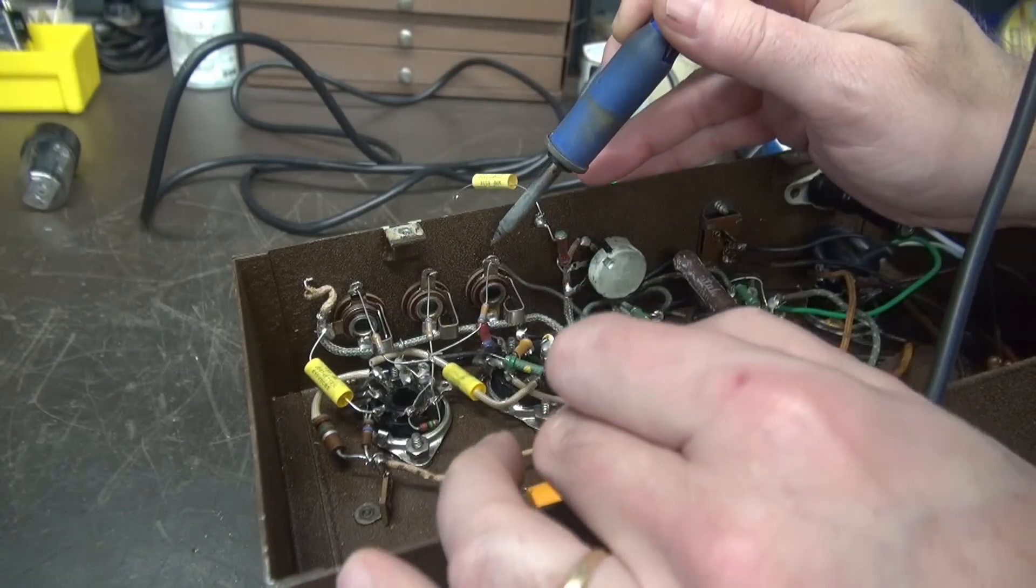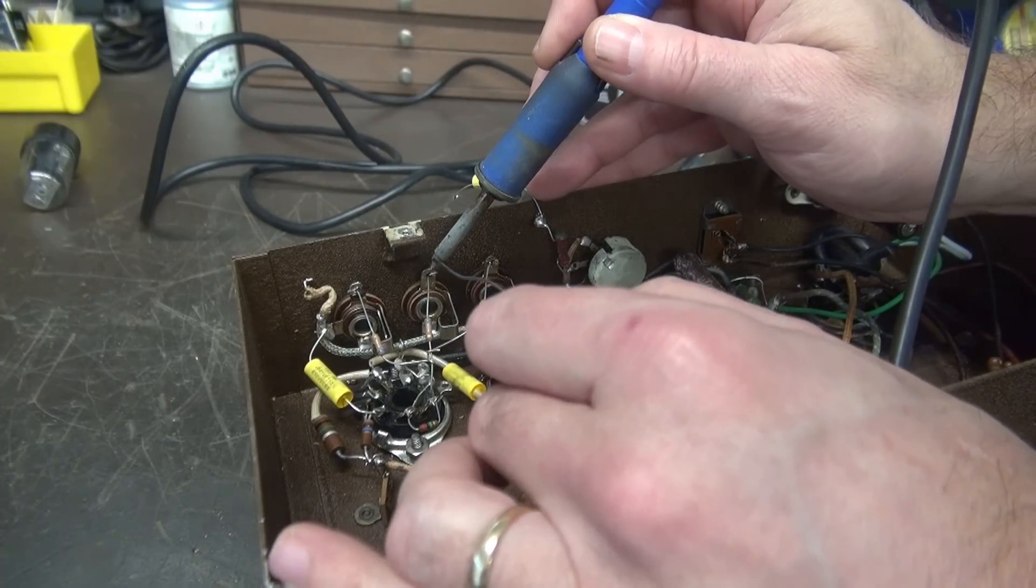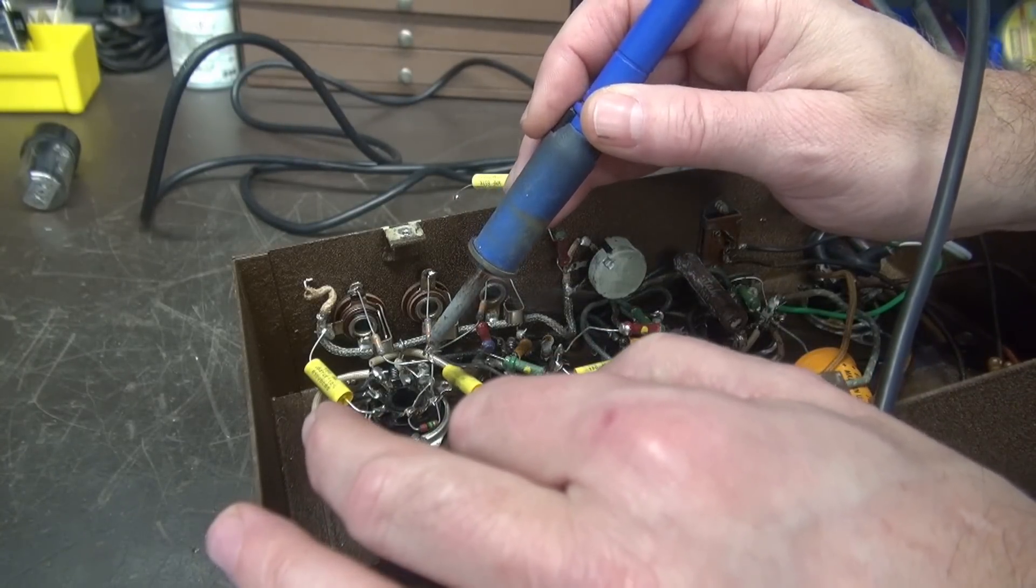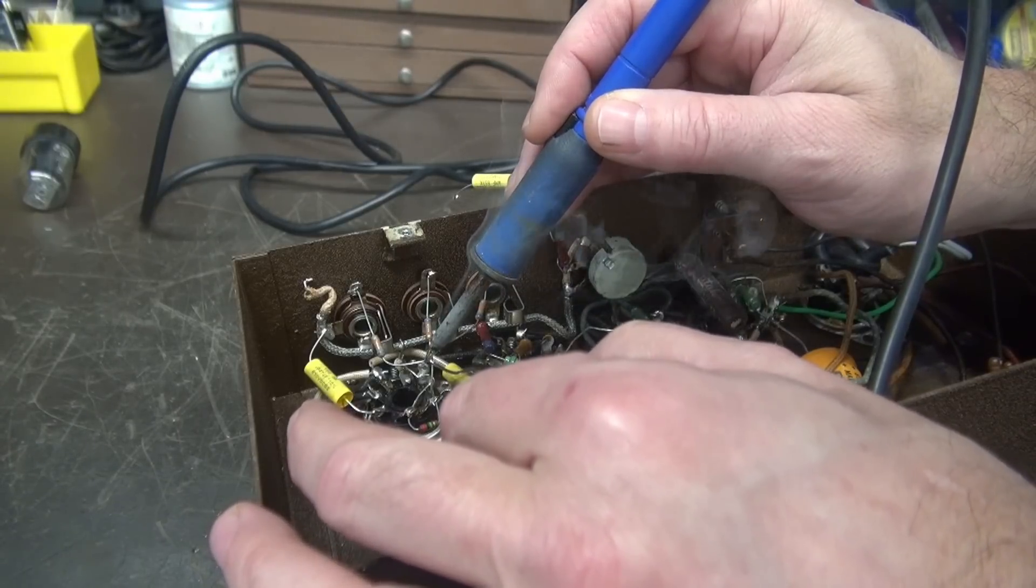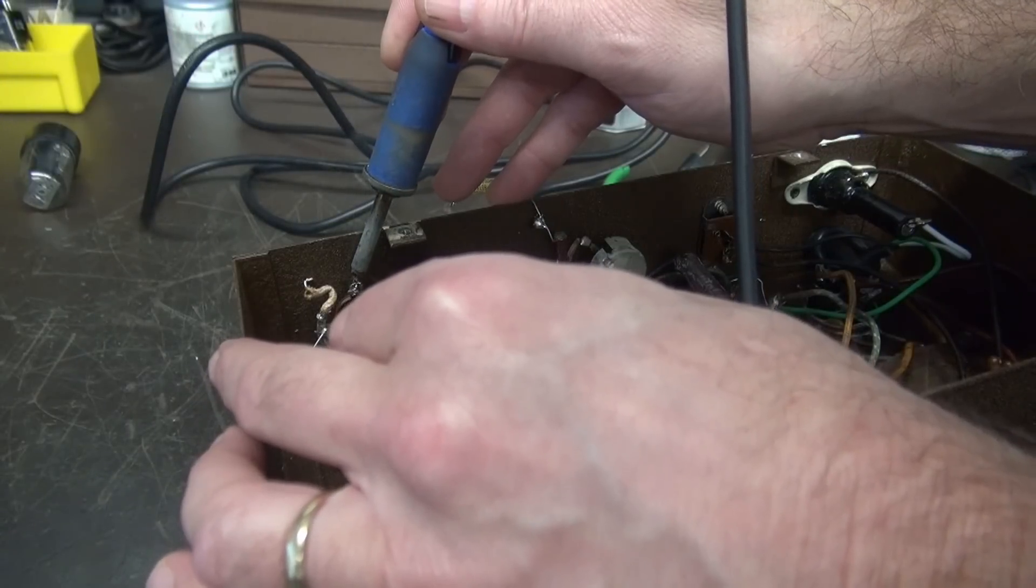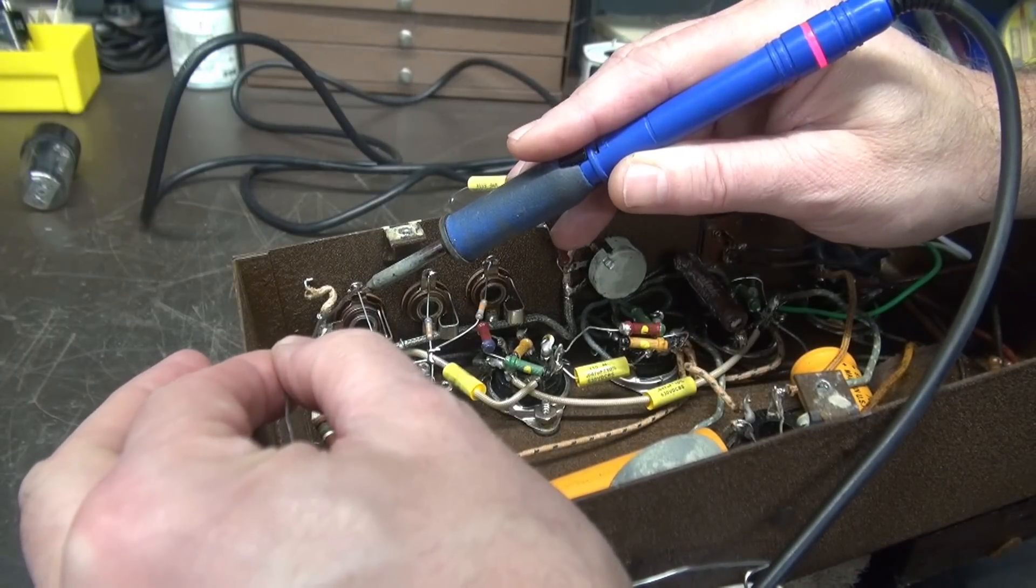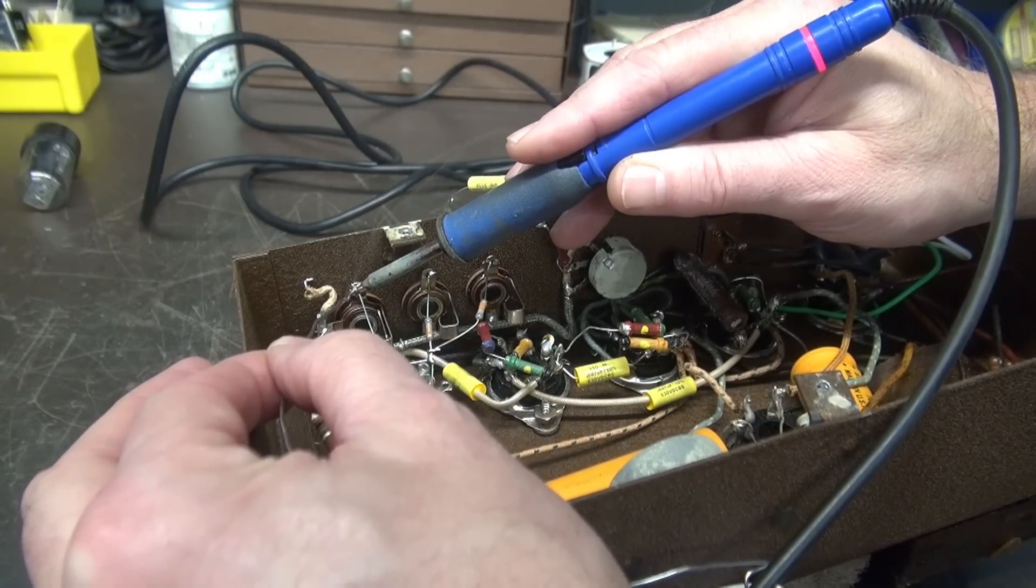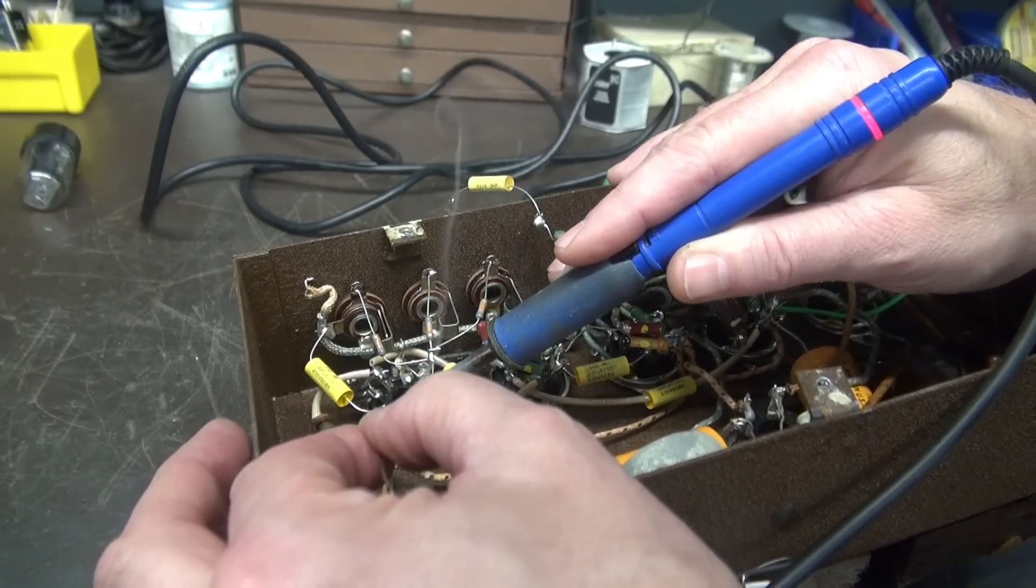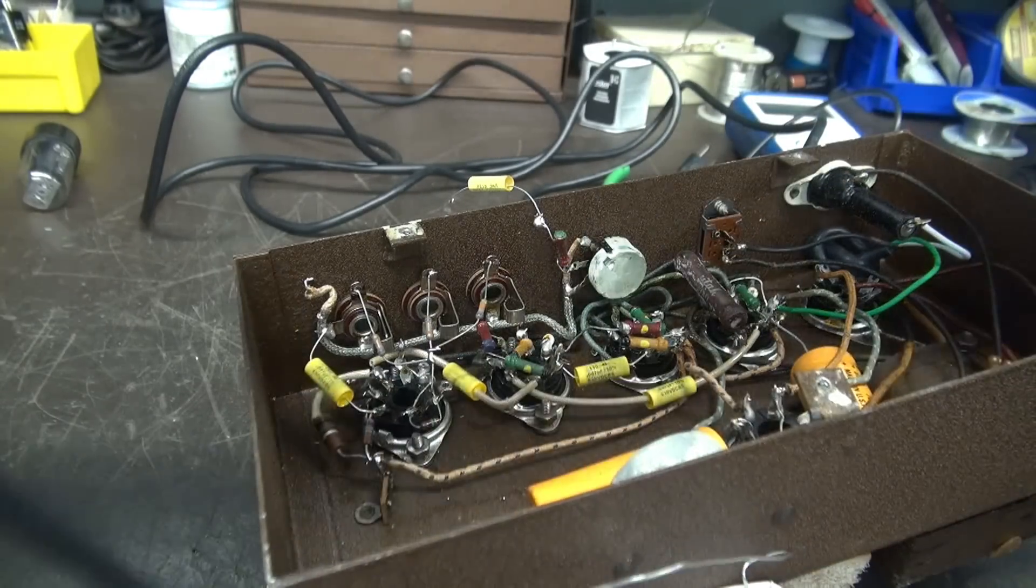All right. Well, there we go. There's 68Ks going to each of the input jacks. They're all tied together here. Then we come down here to the tube and we get our new 2 meg resistor to ground. Input wiring is complete.